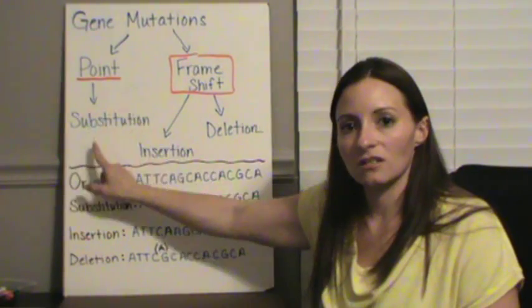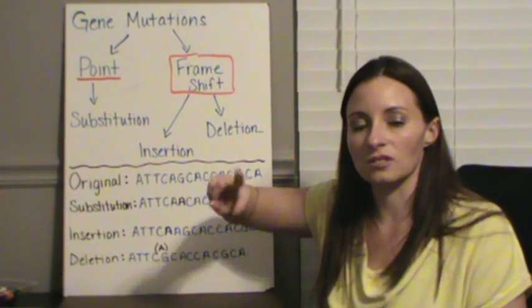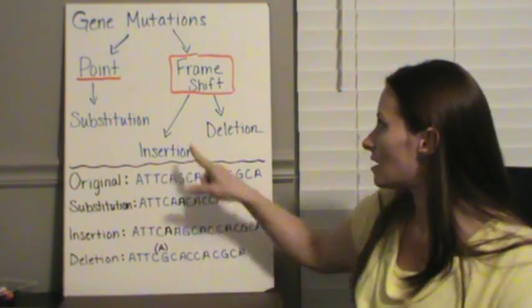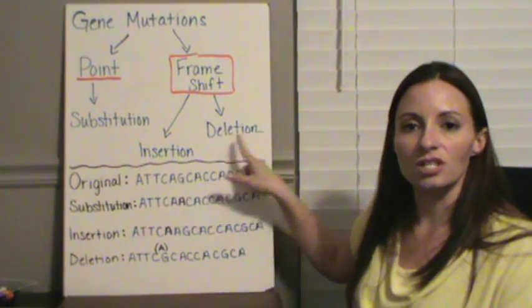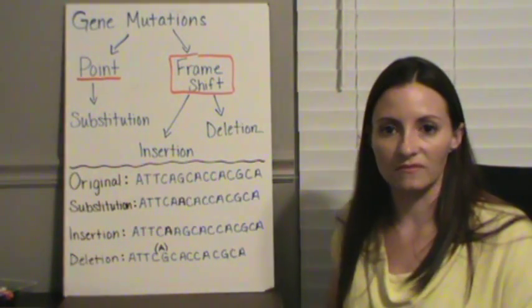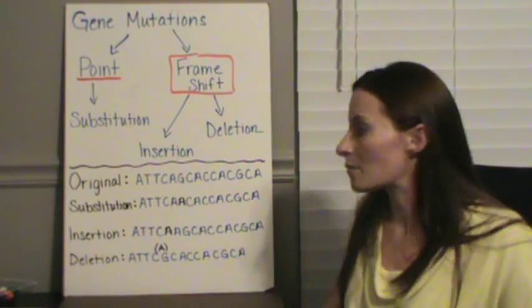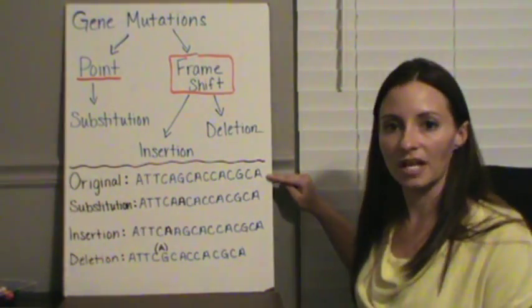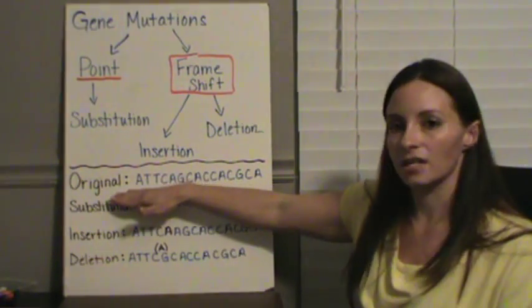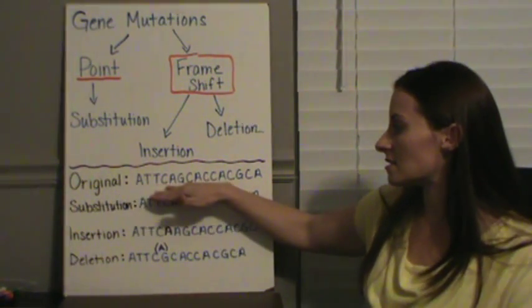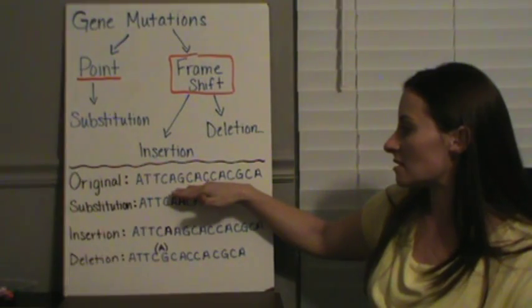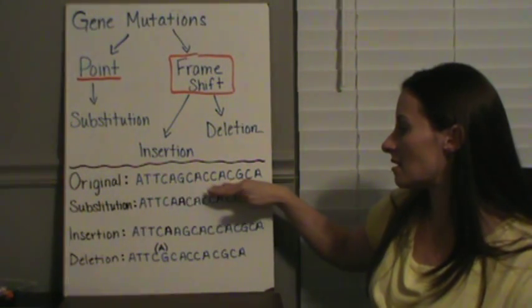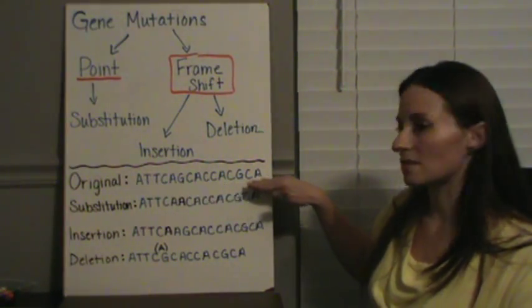There's one type of point mutation called a substitution, so this is where we're just going to trade one for another, and then you can have both an insertion or a deletion for frameshift mutations. I have some examples down here below.